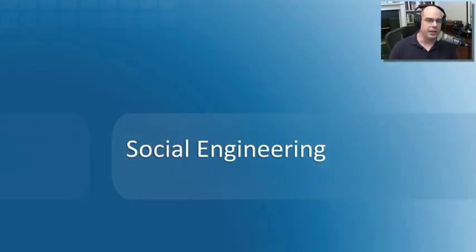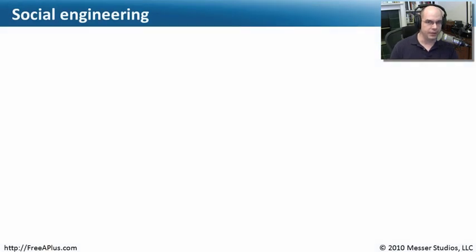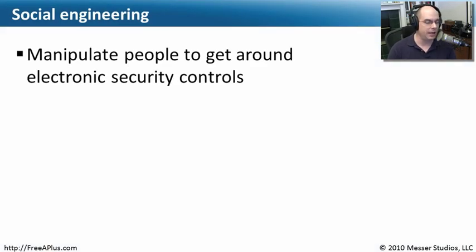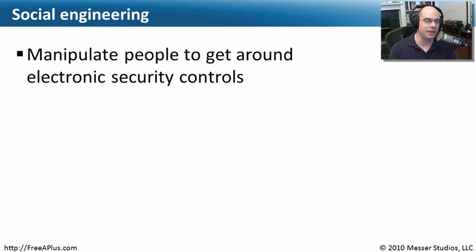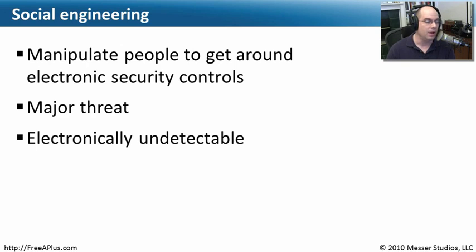Another important security concern is social engineering. Social engineering takes into account the human element — getting around all your firewalls, all your encryption, and all your technology, simply by talking to a person, accessing something a person might be doing, or tricking a person into clicking on something they shouldn't. We have all these security controls in place, and here's something that has nothing to do with technology, which makes it a major threat, especially since we can't detect it.